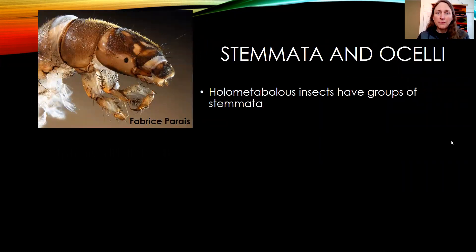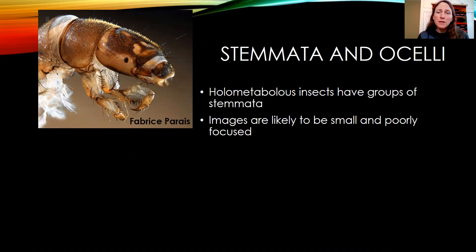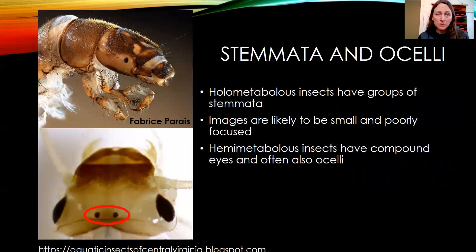So I'm going to talk briefly about stemmata and ocelli. This is a picture of a caddisfly, and you can see it doesn't really have a big compound eye. It has a cluster of different black dots — it's a holometabolous insect, so it has these groups of stemmata on the side of its head. The images it can produce are likely to be small and poorly focused.